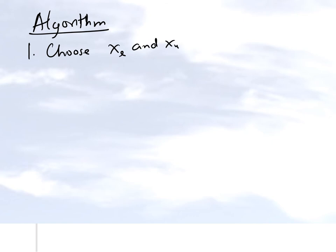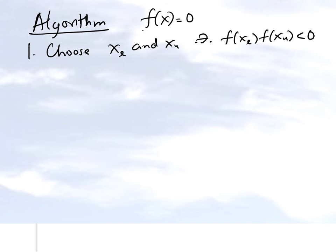Let's write the algorithm for the bisection method. The first step is to choose two points xl and xu such that f(xl) times f(xu) is less than zero — meaning the function is changing sign. We're starting with trying to find the root of the equation f(x) = 0. The function has to be real and continuous between those two points. Keep in mind that if somebody gives you these two limits, you should always check whether it's a valid bracket or not — many times students will not check this.